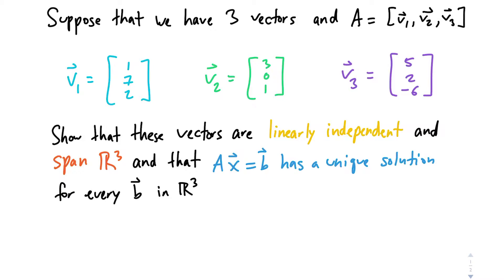This problem wants us to show that they're linearly independent, that they span R³, and that A times X equals B has a unique solution for every single B in R³.